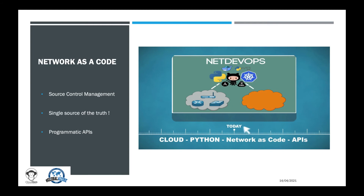The second principle is that you should treat your source control as the single source of truth for how your network should be configured. Manual configurations by network engineers is a deviation and a mistake in a network-as-a-code world. Part of the reason behind the infrastructure-as-a-code principle within cloud applications is the ability to quickly and efficiently stand up fresh instances of the infrastructure needed for an application within different environments. The final principle relates to how the configurations from source control are actually applied to the network devices themselves — the actual implementation of the code must be done through programmatic APIs.